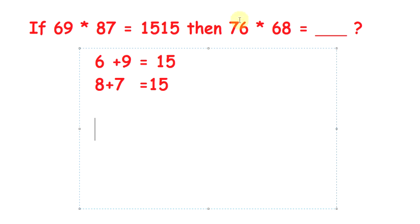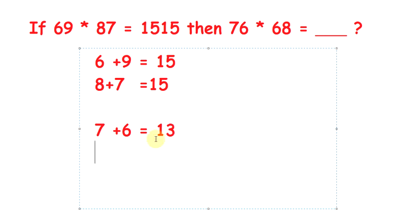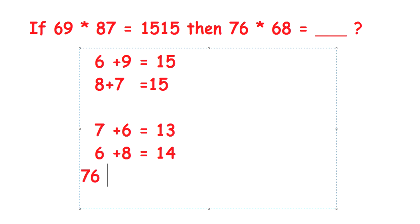By using this concept, we can rewrite 76 times 68 in the same manner. So 7 plus 6 equals 13, then 6 plus 8 equals 14. Therefore, 76 times 68 equals 1314.